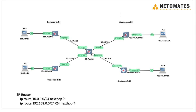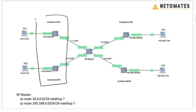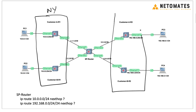In this topology we have a service provider, and the main objective of the service provider is to connect customers in different locations. Let's say one location is in New York and another is in London. We have two customers, Customer A and Customer B, with offices in both cities. Connecting links themselves is very expensive for customers, which is why they chose to connect through the service provider.